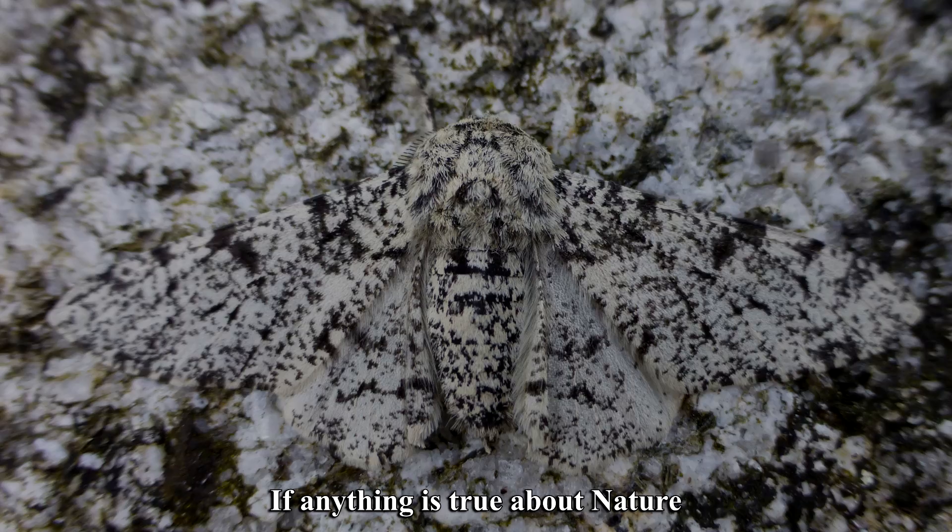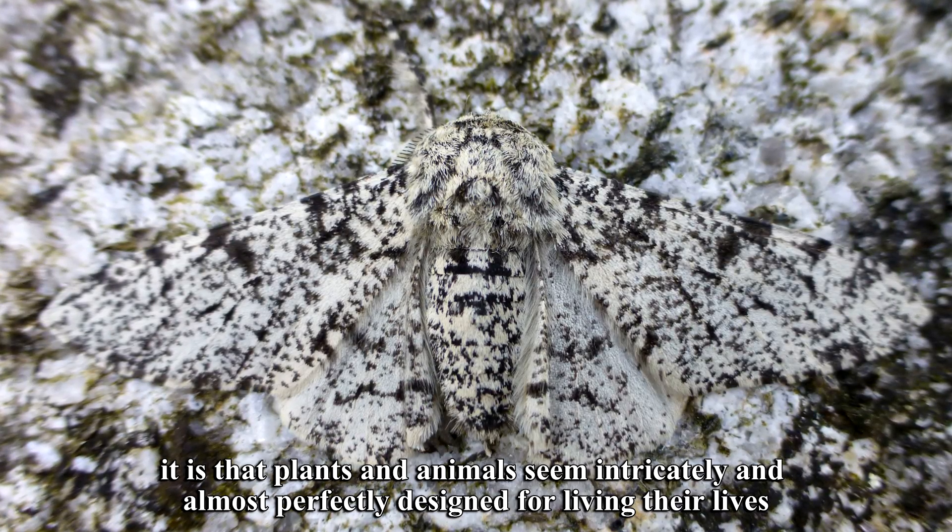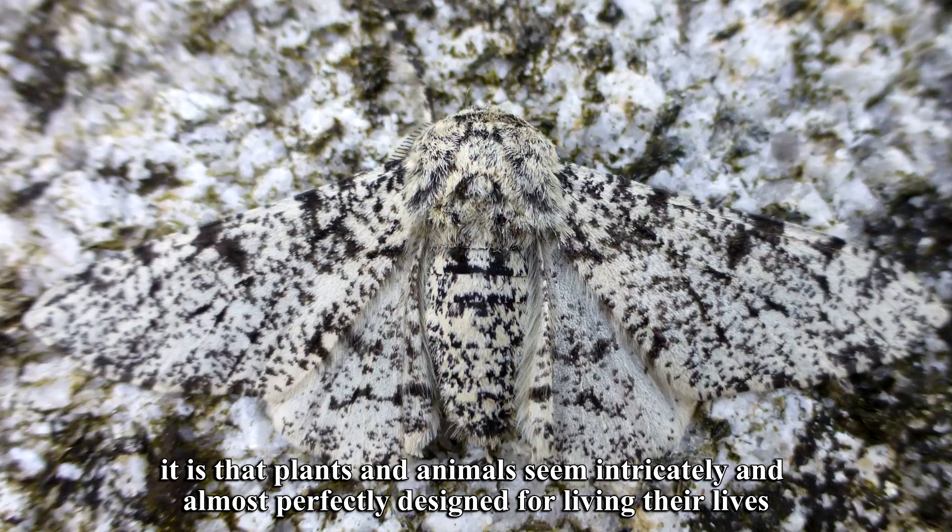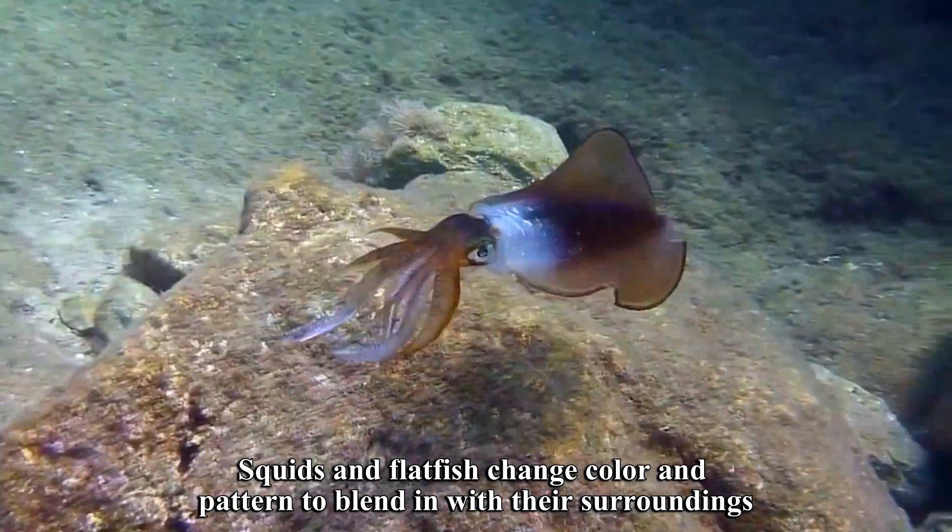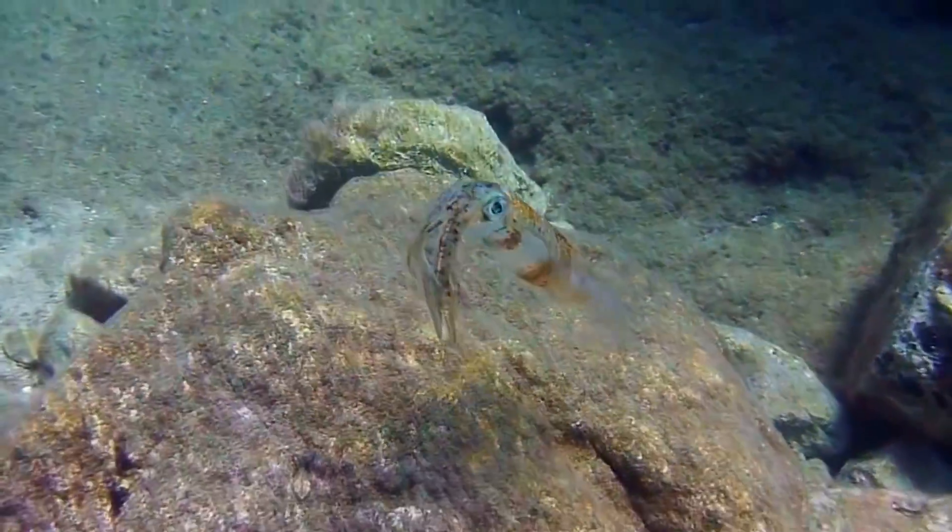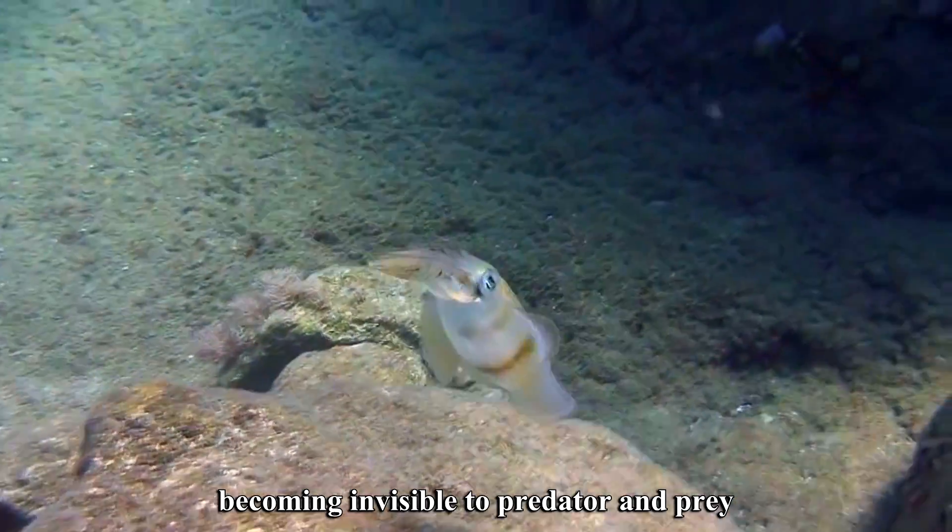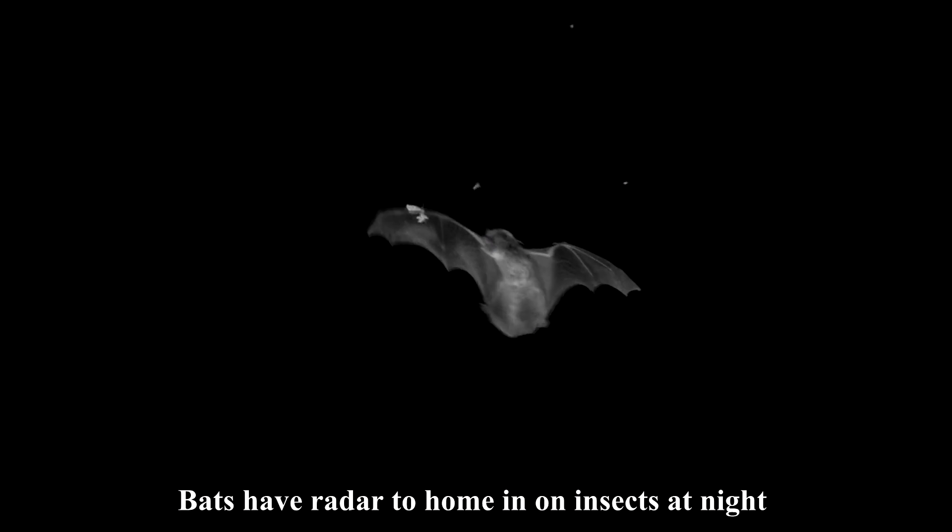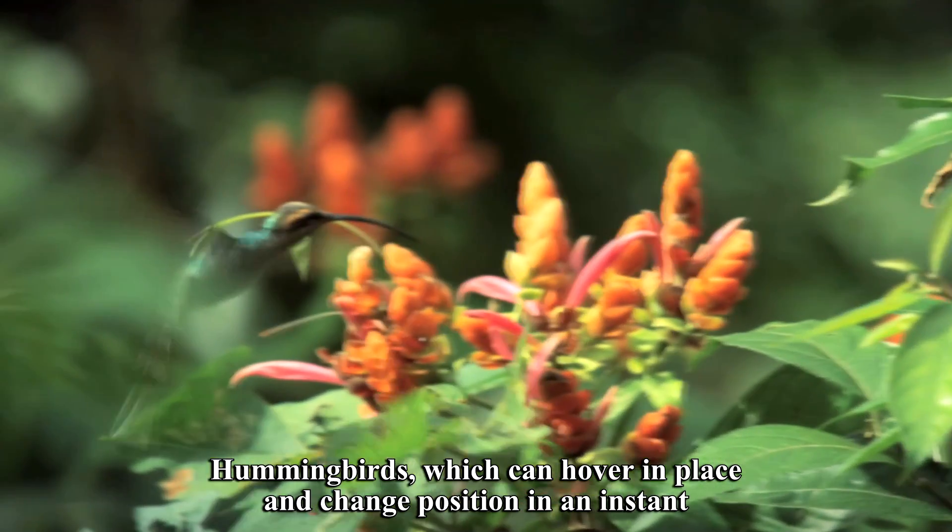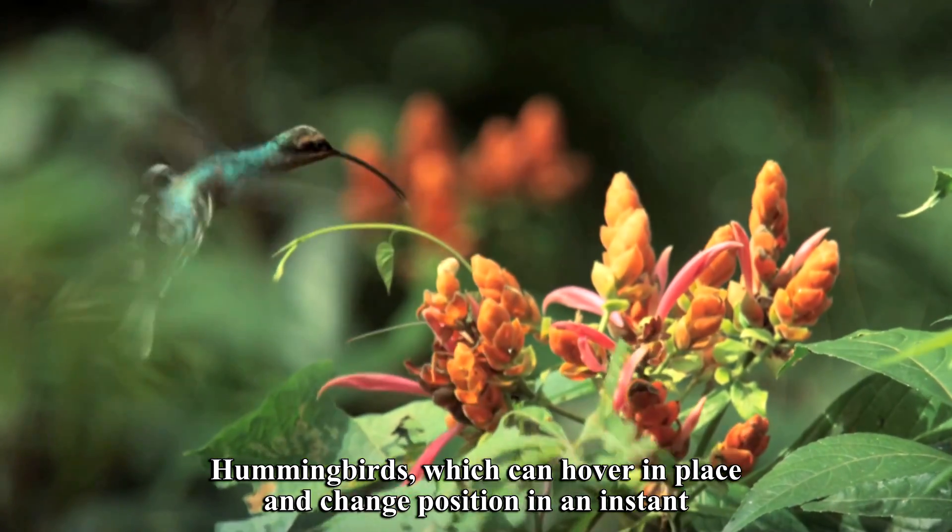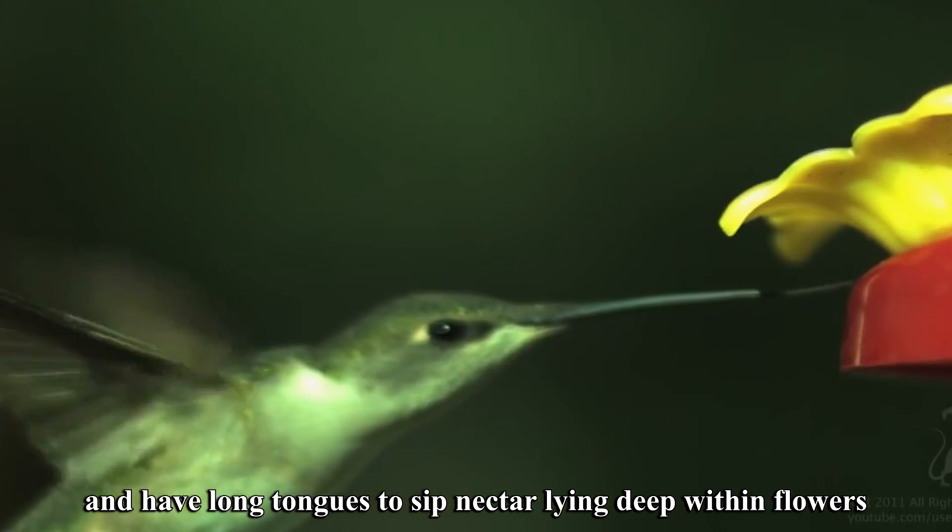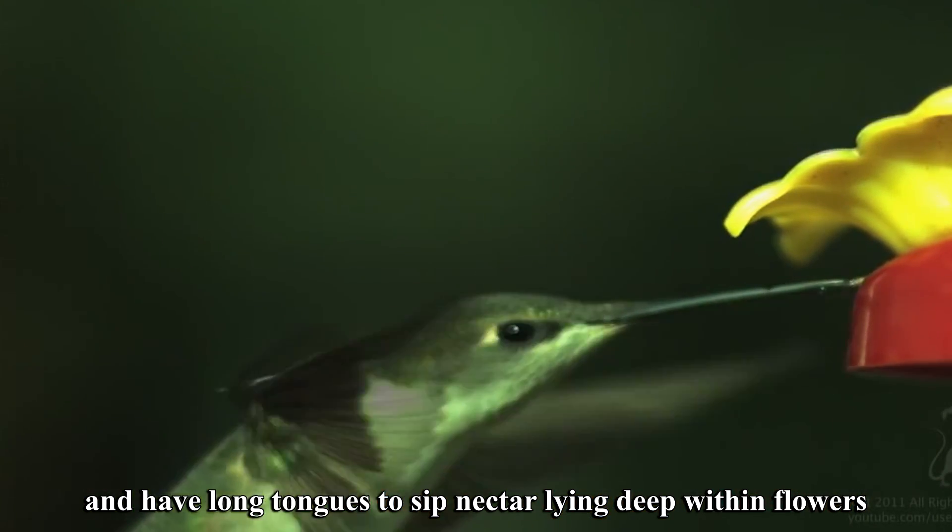If anything is true about nature, it is that plants and animals seem intricately and almost perfectly designed for living their lives. Squids and flatfish change color and pattern to blend in with their surroundings, becoming invisible to predator and prey. Bats have radar to home in on insects at night. Hummingbirds, which can hover in place and change position in an instant, are far more agile than any human helicopter and have long tongues to sip nectar lying deep within flowers.